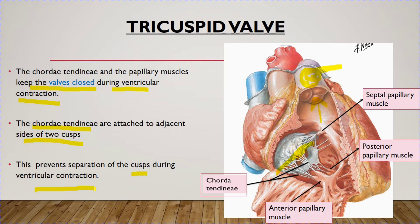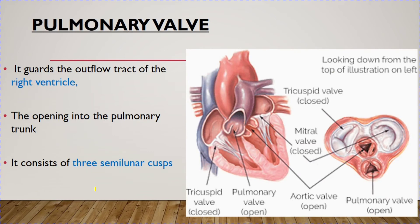During ventricular relaxation — the filling phase — the tricuspid valve is open and blood enters the right ventricle from the right atrium. During ventricular contraction, the tricuspid valve closes and blood enters the pulmonary trunk by passing through the pulmonary valve. Now we will discuss the outflow valve, which is the pulmonary valve, guarding the outflow tract of the right ventricle.